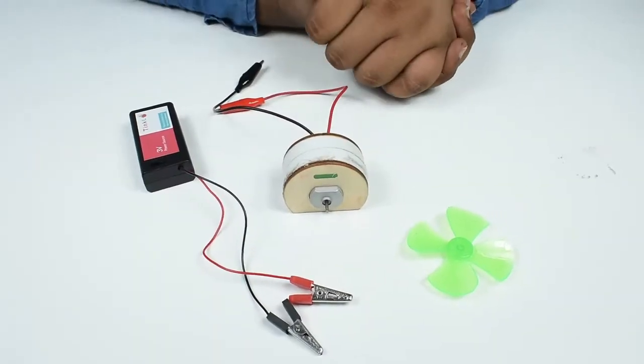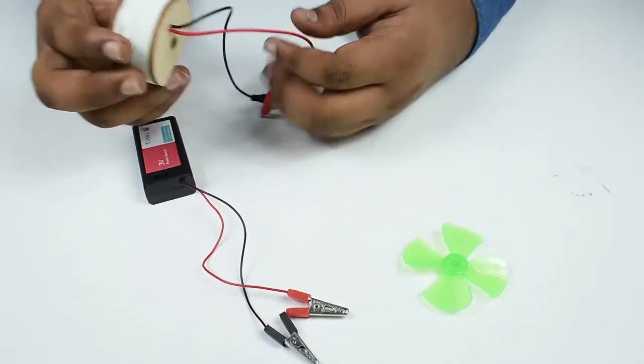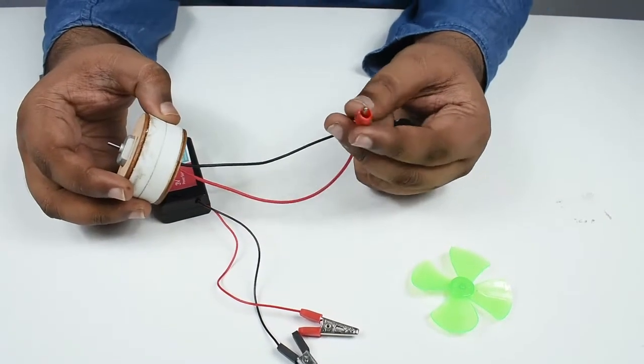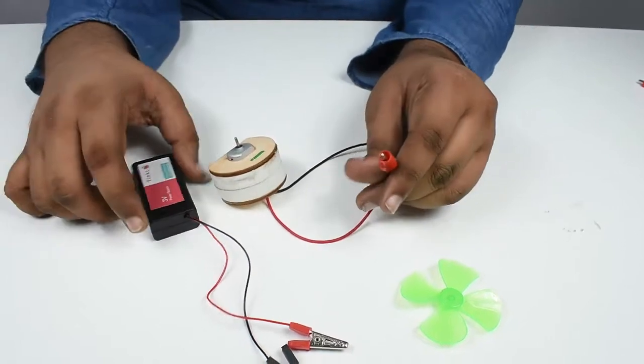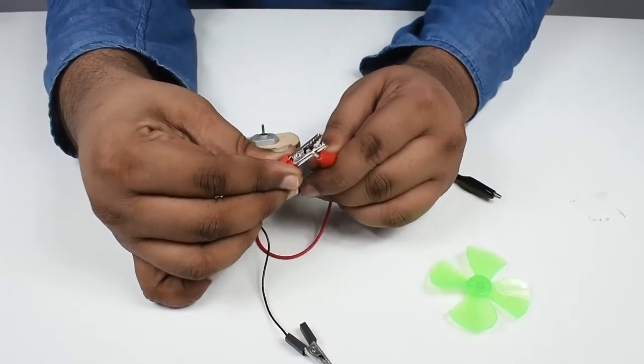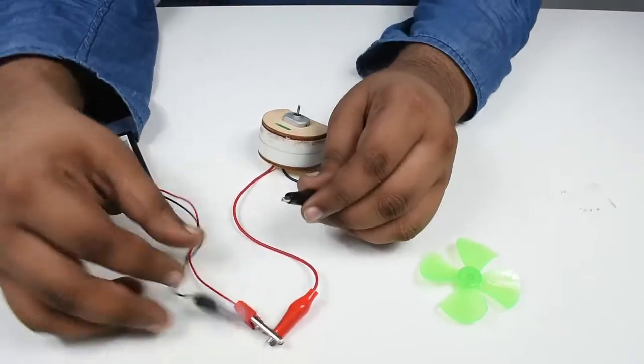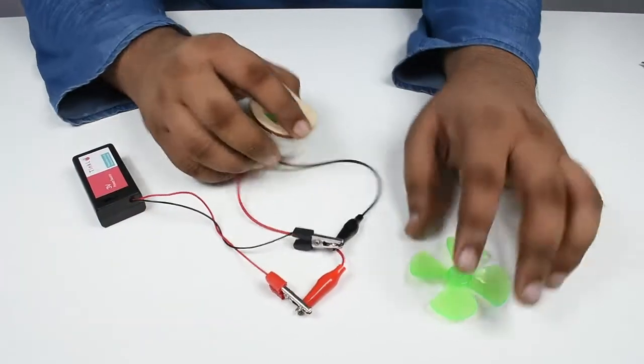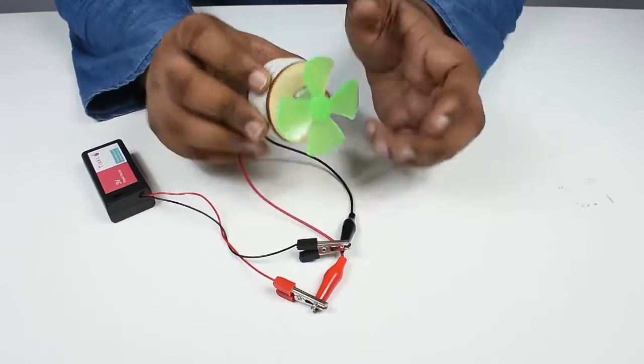Next up we have the simple DC motor. In this bit you have the red wire and the black wire which already come with the alligator clips. You can connect these to the battery, the red alligator clips together and the black alligator clips together, and then you can fit a fan and when I switch it on, it rotates in one direction.